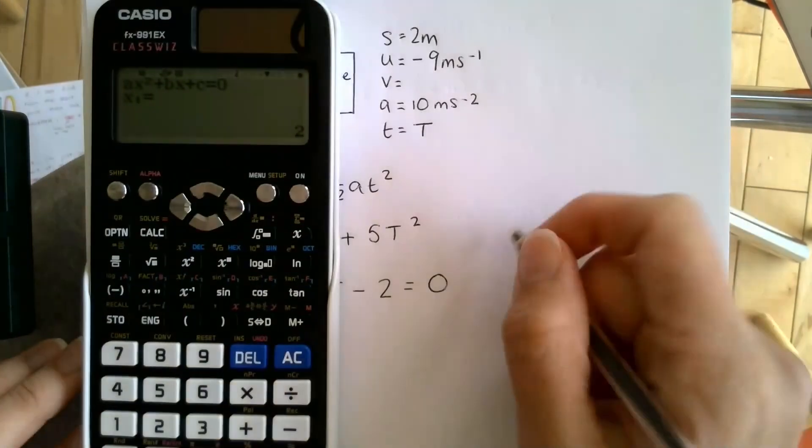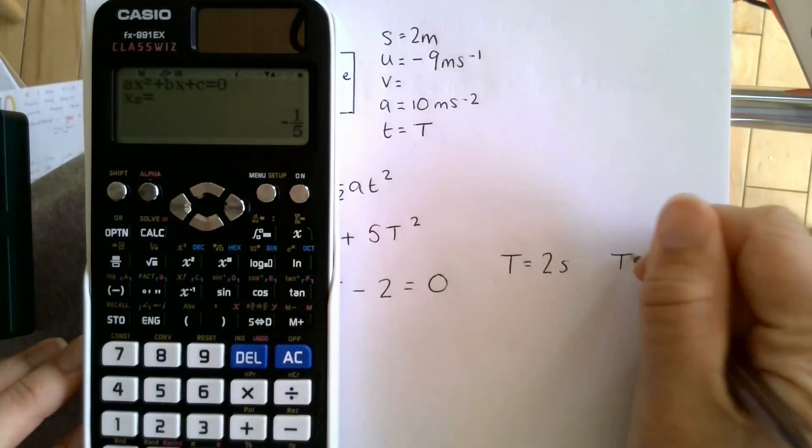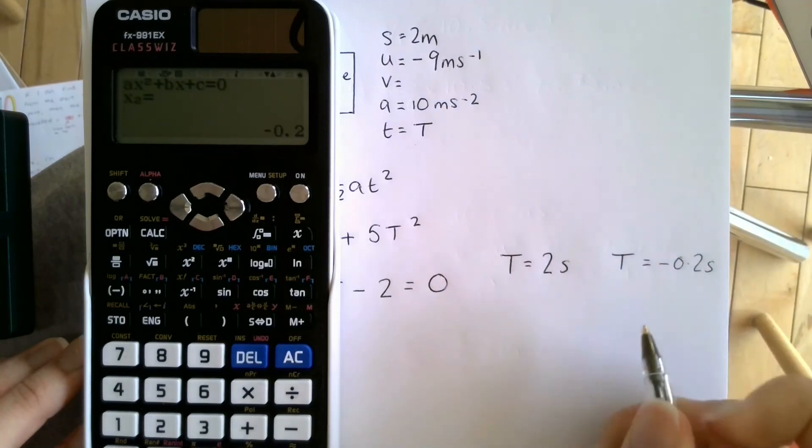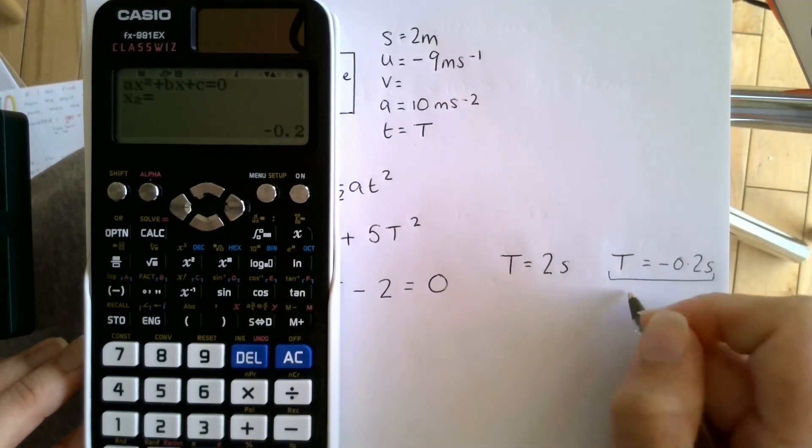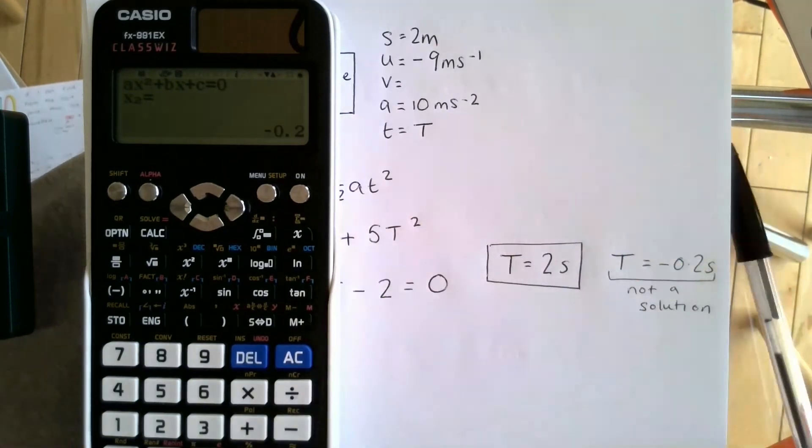I get that T is equal to two seconds or T is equal to negative 0.2 seconds. Now clearly time can't be negative, so this is not a solution. Instead, my answer is that the time is equal to two seconds.